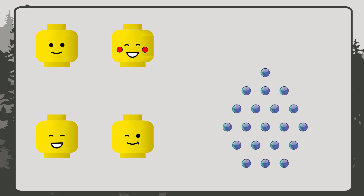Suppose I want to give these 20 marbles to 4 friends. To do this, I need to divide 20 by 4. So I'm going to take turns giving each friend a marble until I run out.